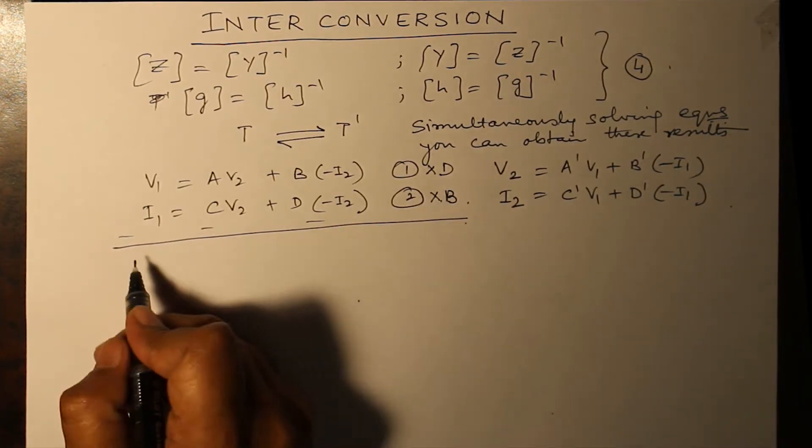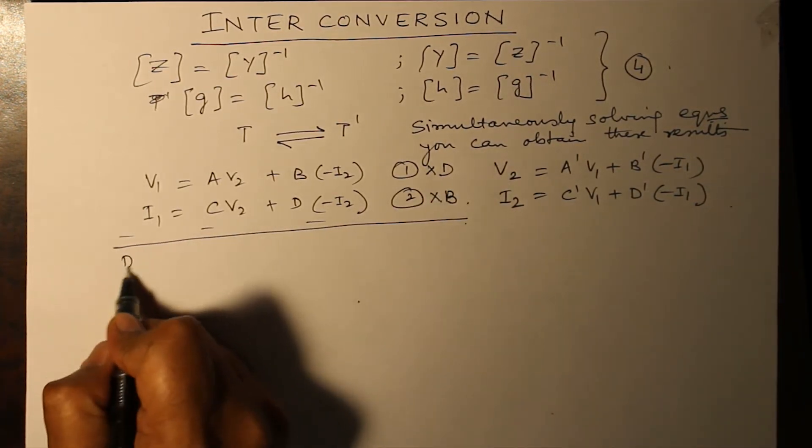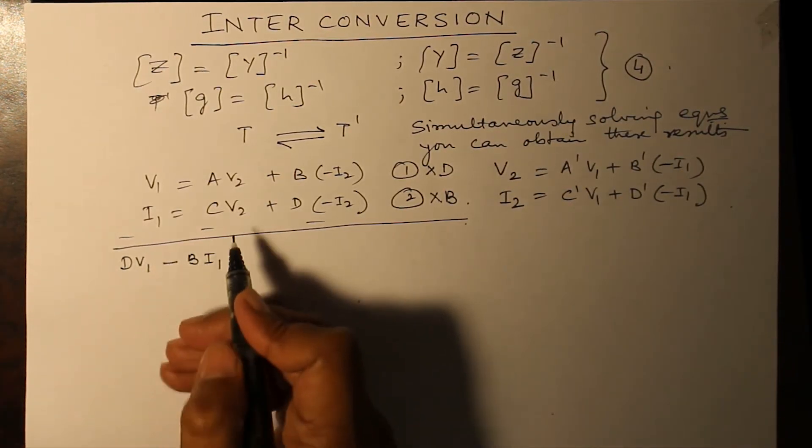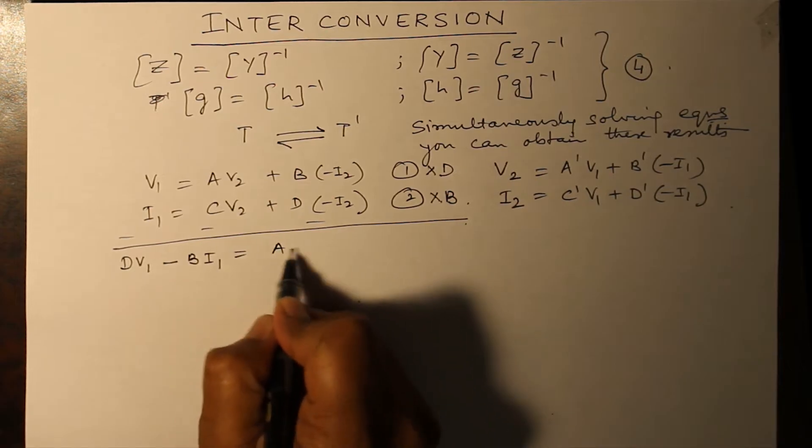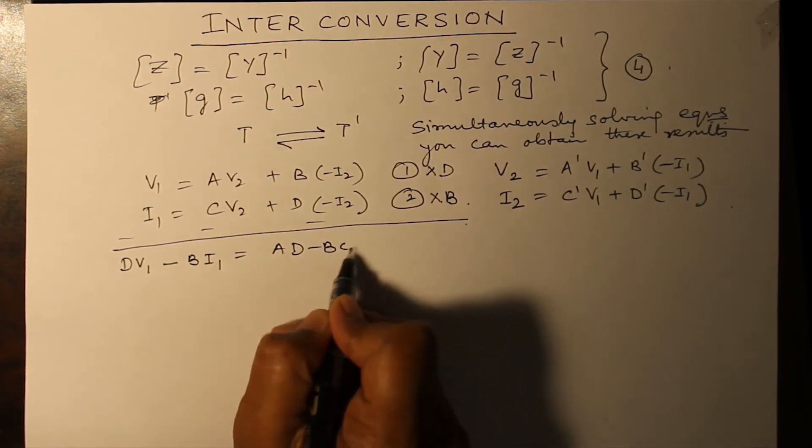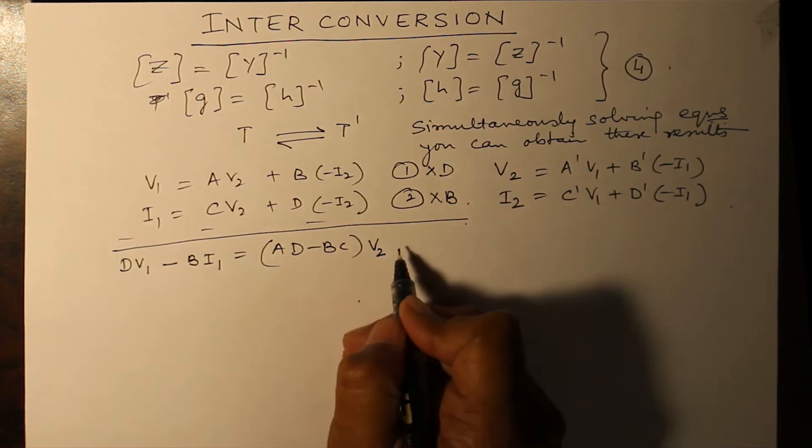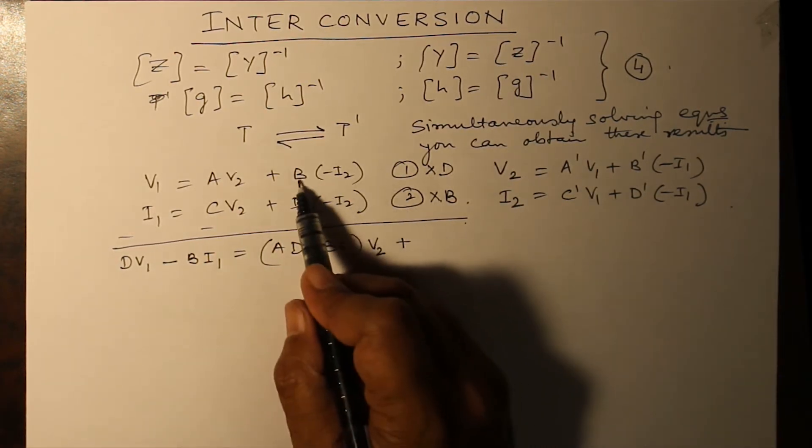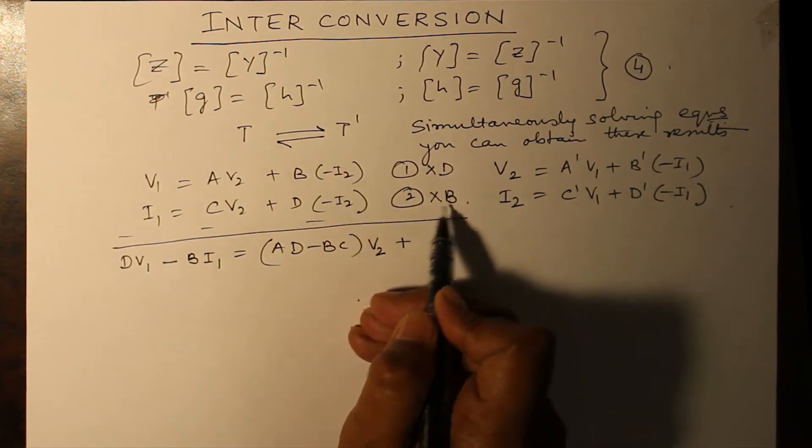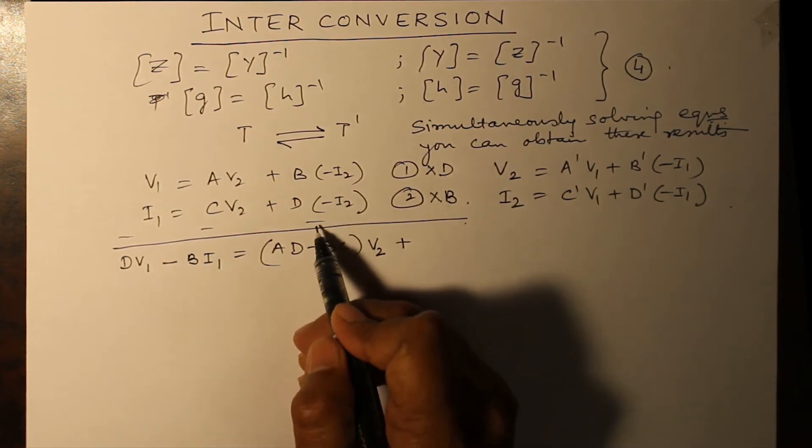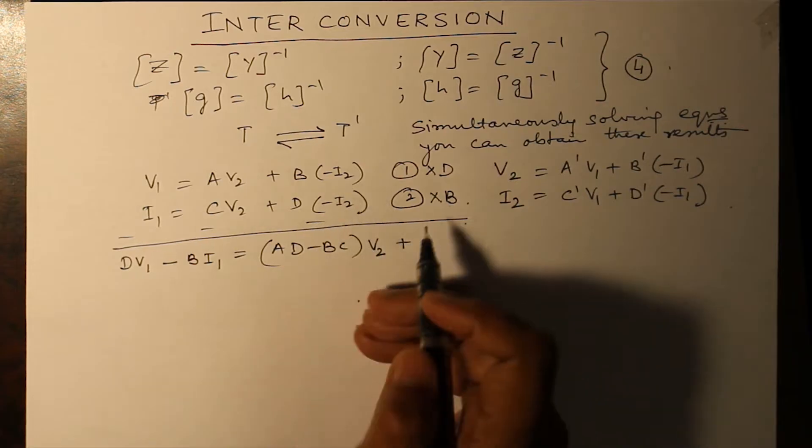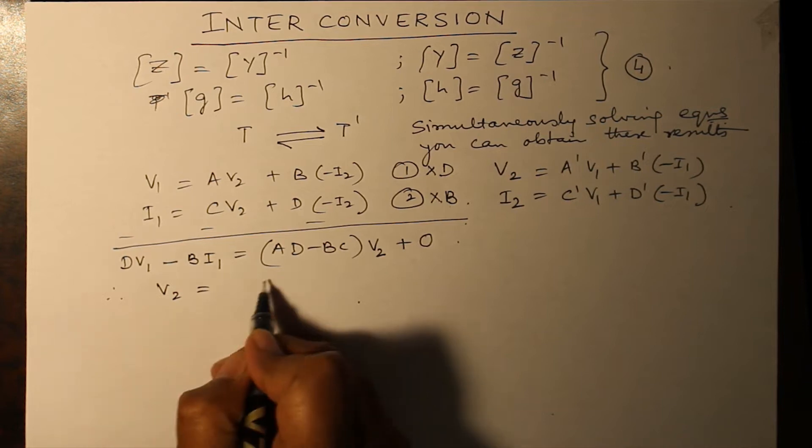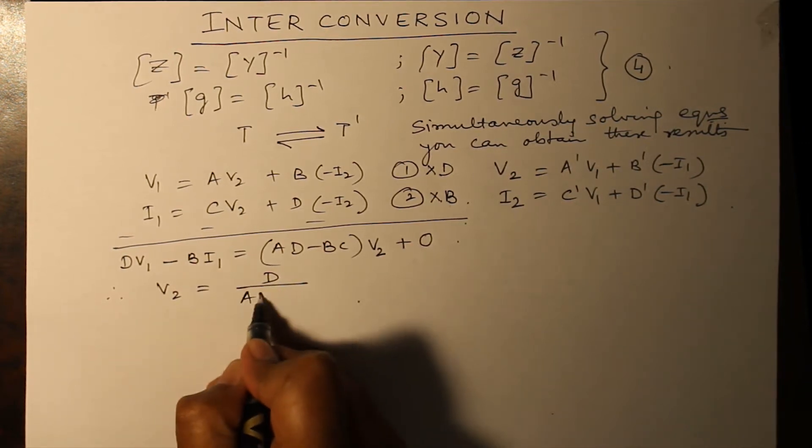What you get is D V1 minus B I1, and here you have AD minus BC into V2. This becomes zero because B into D multiplied by minus I2 becomes plus, so it is zero. Therefore, we can write V2 as D over AD minus BC.